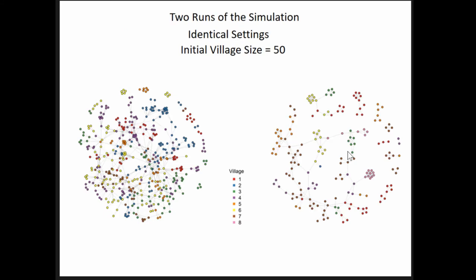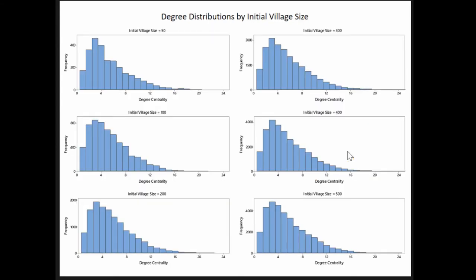The first thing we can say about the networks created is that these are identical settings of the simulation, yet these networks vary quite a bit in size and density and the extent to which people from different villages are intermixing closely. Looking at degree distribution: it's roughly distributed the same — it has a bit of a right skew — but it doesn't seem to matter how big the population is for degree distribution.